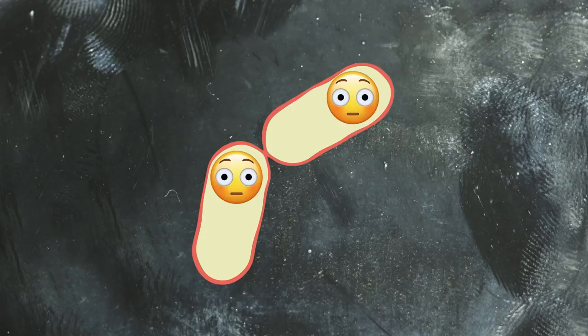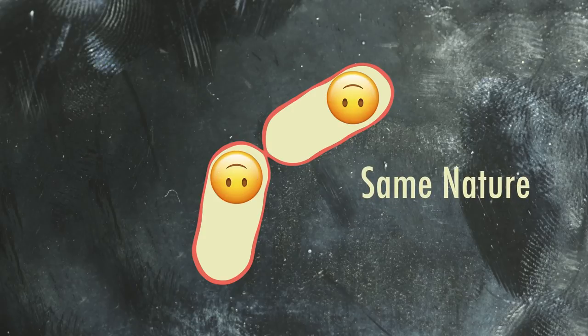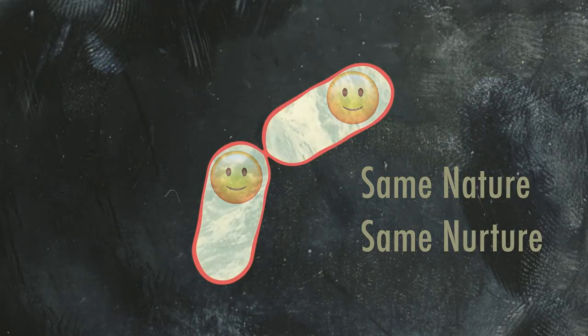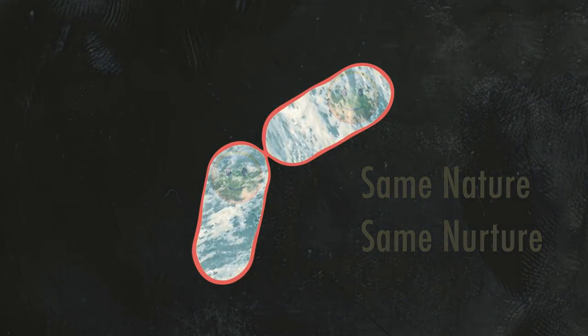These bacteria have exactly the same DNA and are made of the same stuff. Also, they're the same age and were raised in the same environment. These two bacteria are identical clones of each other. But there are differences between the two cells that arise at the molecular level.